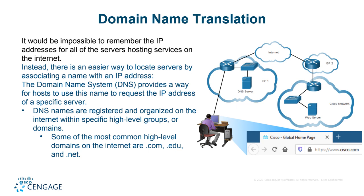DNS names are registered and organized on the internet within specific high-level groups or domains. Some of the most common high-level domains are .com, .edu, .net. The user sends the request, and the DNS will find the IP address of that website.